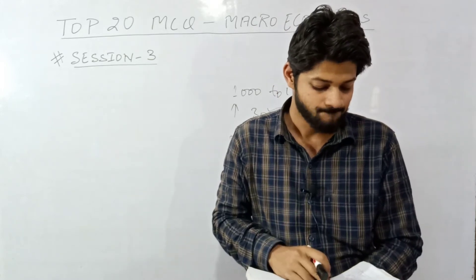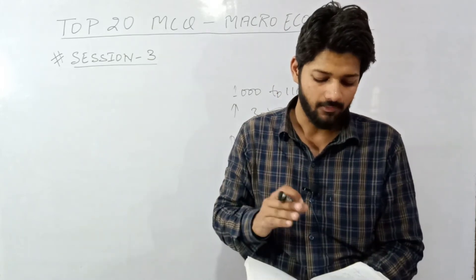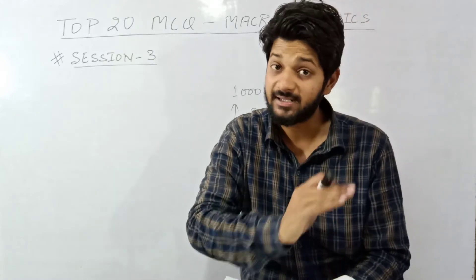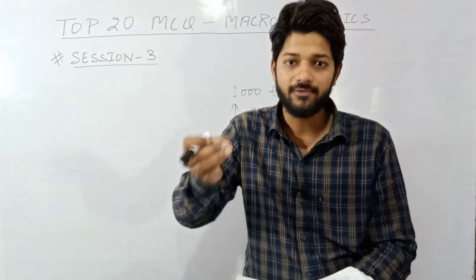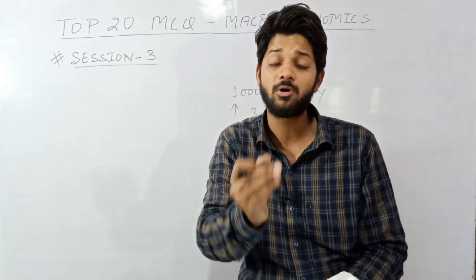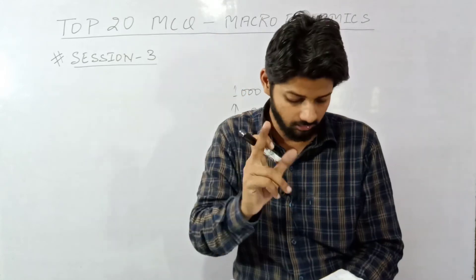Question number eighteen: the value of dash can never be negative while dash can have a value less than one. The value of APC can never be negative and the value of APS can be less than one. Saving can be less than one when consumption is more than one - autonomous consumption.